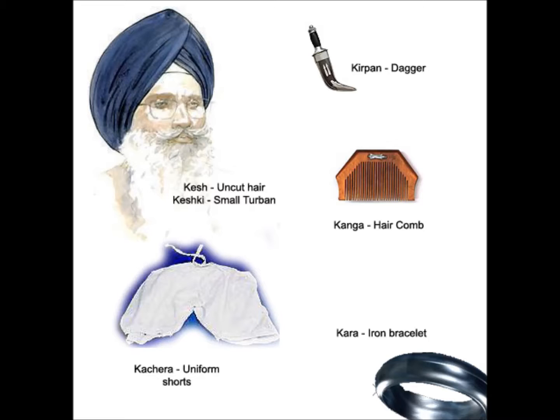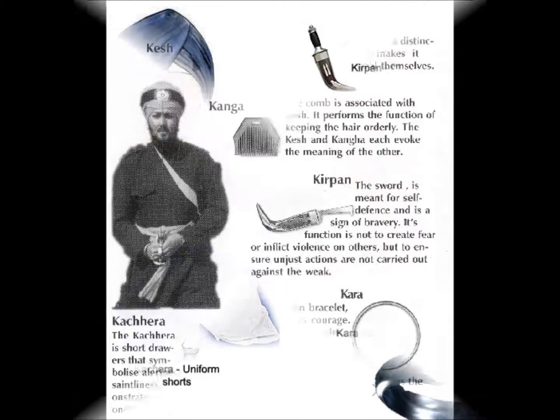The five Ks are: Kesh, or uncut long hair; a Kanga, a small wooden comb; a Kara, a steel or iron bracelet; a Kachera, a piece of undergarment; and a Kirpan, a short dagger.